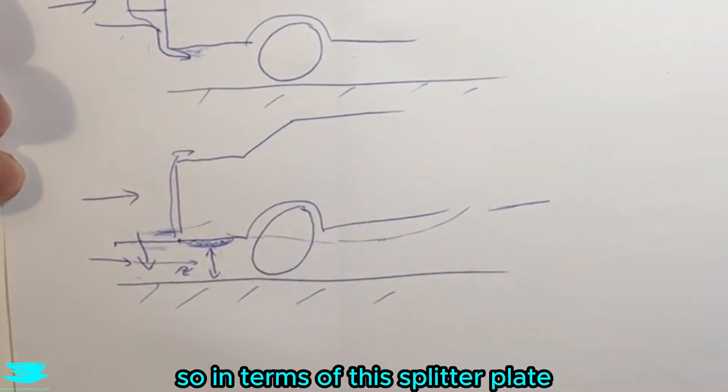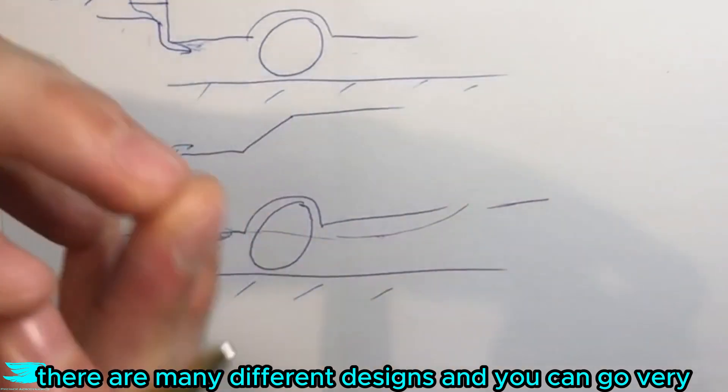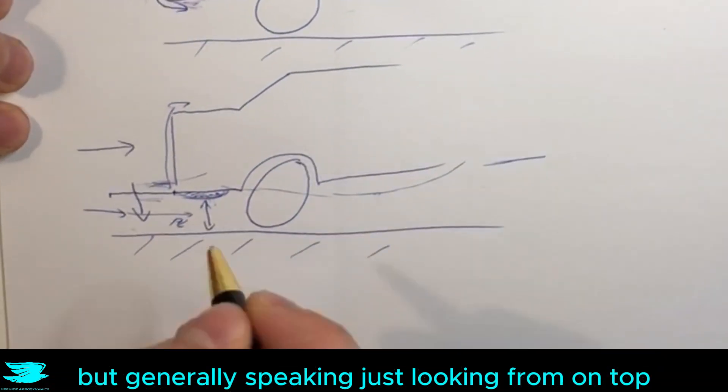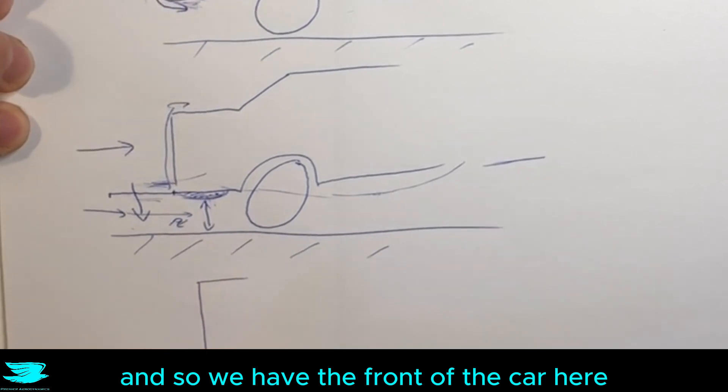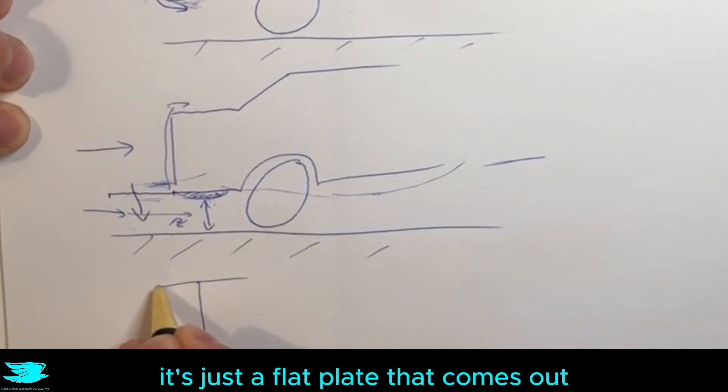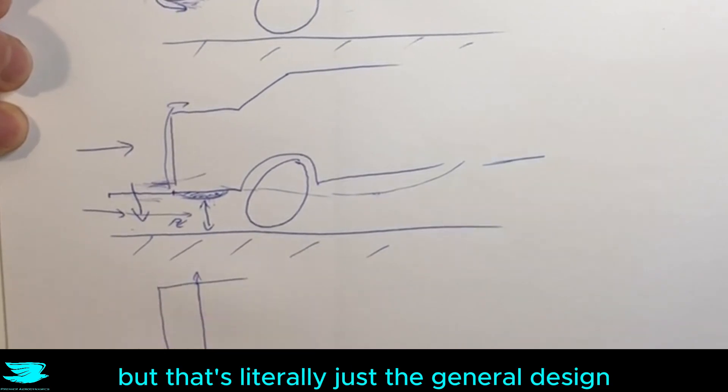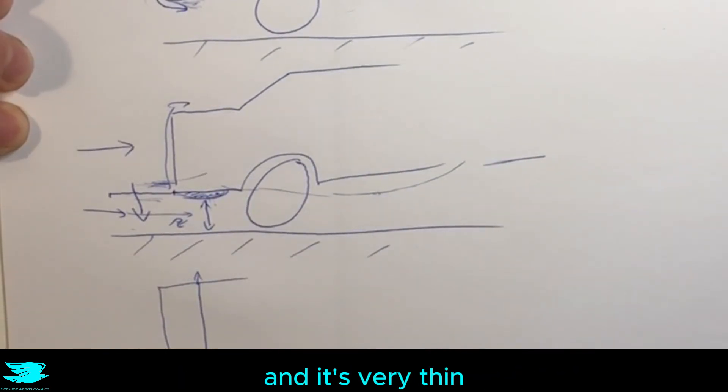So in terms of this splitter plate, there are many different designs, and you can go very complex. But generally speaking, it's just, looking from top, let's say we have the front car here, it's just a flat plate that comes out, and sometimes it extends further out, sometimes not, but that's literally just the general design, and it's very thin.